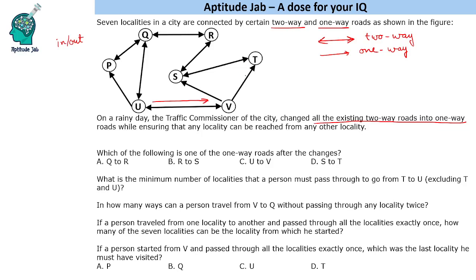A person can come to T from V, but a person has to go out from T and cannot go back on that route. One-way routes are fixed — we cannot change them; we have to change the two-way routes. So T to S is the direction. If you see, from V to S a person can enter, and a person can enter from T to S, but the exit will only be from S to R. So if a person is at S, the person cannot go to T or V directly — the person has to go to R.